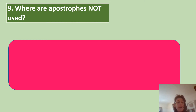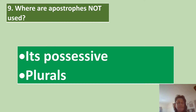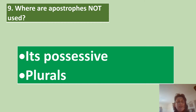So where are apostrophes not used? Stop the video while you have a think. Apostrophes are not used in 'its' possessive — for example, 'its colour' or 'its length'. And apostrophes are not used in plurals — for example, apples, kittens or lessons.